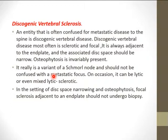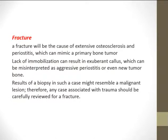An entity that should be remembered is discogenic vertebral sclerosis, which is often confused with metastatic disease of the spine. It is most often sclerotic, usually focal, always adjacent to an end plate, and associated with disc space narrowing; osteophytosis is almost always present. On occasions it can be lytic or mixed lytic and sclerotic. In the setting of disc space narrowing with osteophytosis, focal sclerosis adjacent to an end plate should not undergo biopsy — it is just discogenic vertebral sclerosis.